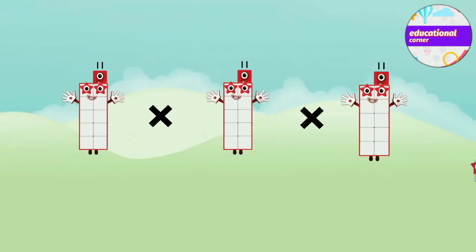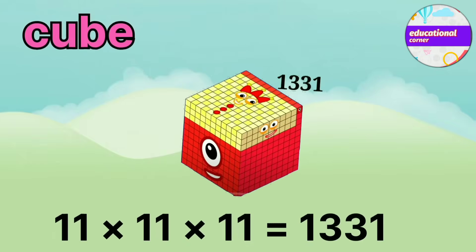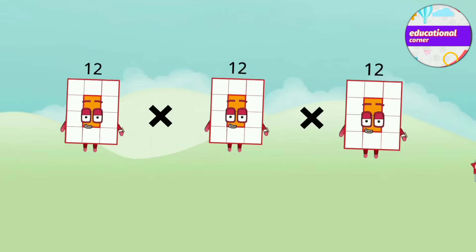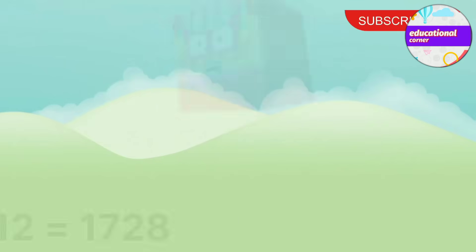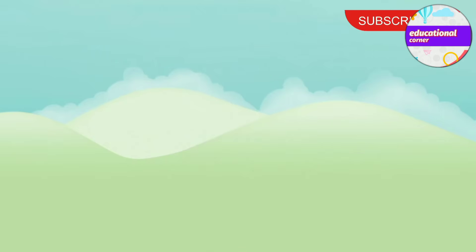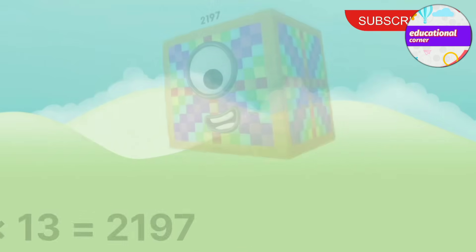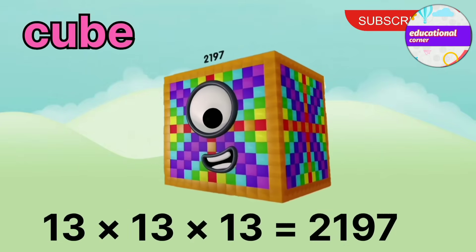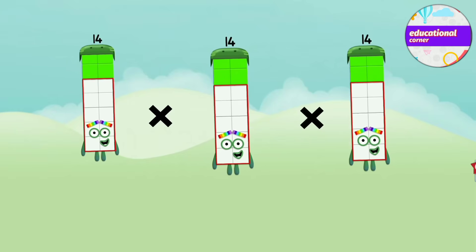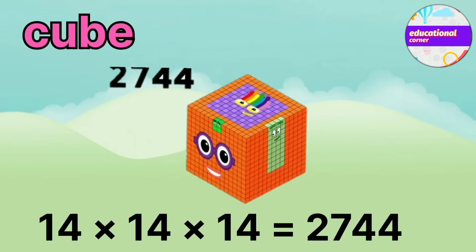11 x 11 x 11 equals 1,331. 12 x 12 x 12 equals 1,728. 13 x 13 x 13 equals 2,197. 14 x 14 x 14 equals 2,744.